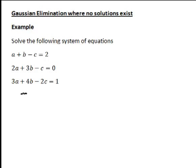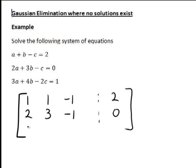So as usual with Gaussian elimination, the first step is to set up an augmented matrix with the coefficients of the unknowns on the left, so 1a plus 1b minus 1c and then the constants on the right, so 2. Similarly, in the next line it was 2a plus 3b minus 1c equals 0, 3a plus 4b minus 2c equals 1.